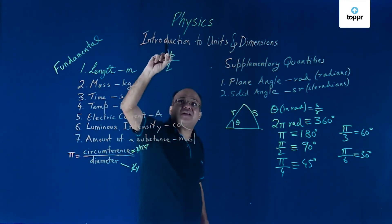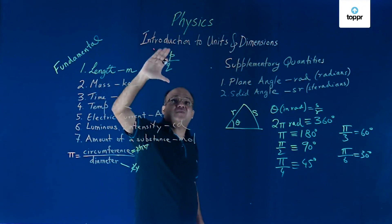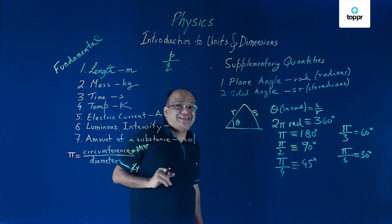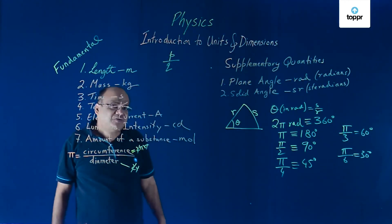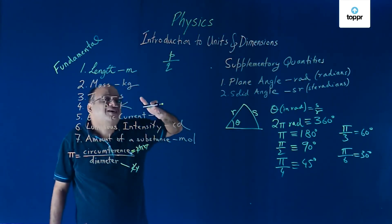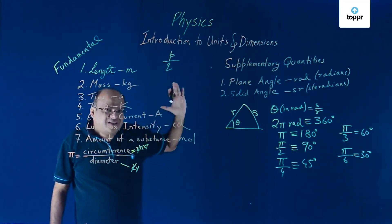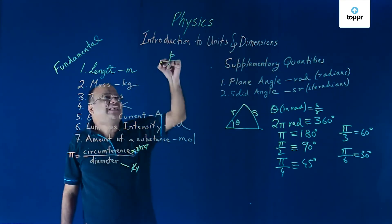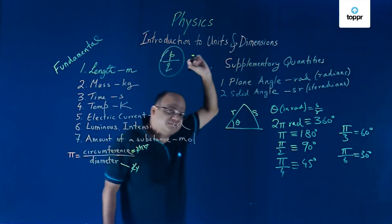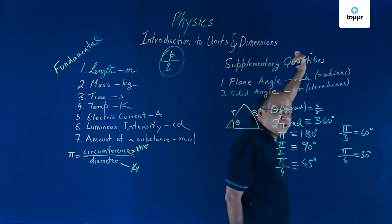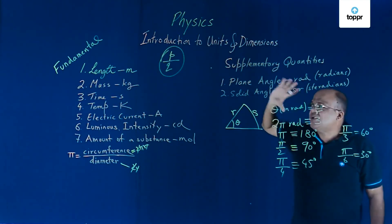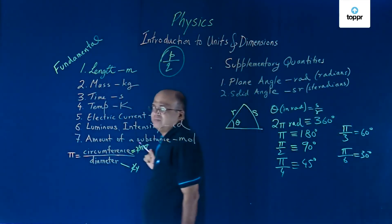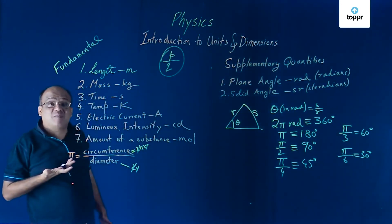Pi is an irrational number. So, you cannot write it as p by q. So, it cannot be 22 by 7 exactly. Pi is approximately 22 by 7. Pi is approximately 3.14. Other way of looking at irrational numbers is that you cannot express it as a terminating or recurring decimal. Let us look at this definition. Irrational number we cannot write as p by q. Where p and q are integers. q is not equal to 0. And p and q do not have a common factor.